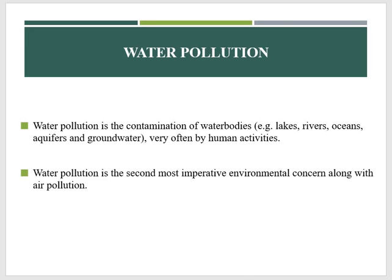There are a number of definitions for water pollution. One definition is: any physical or chemical change in surface water or groundwater that can harm living organisms or make water unfit for certain uses. Another definition is: the contamination of water by the presence of microorganisms, sewage matter, or industrial waste, thereby resulting in the deterioration or change of water quality.